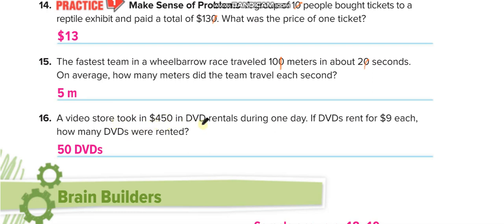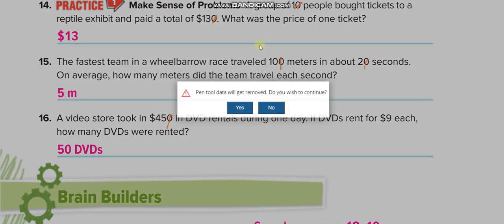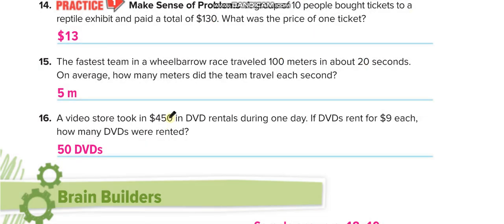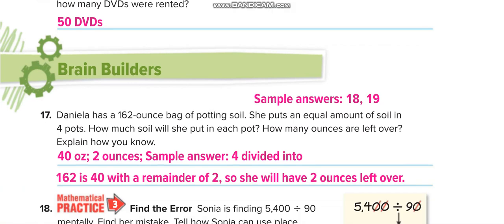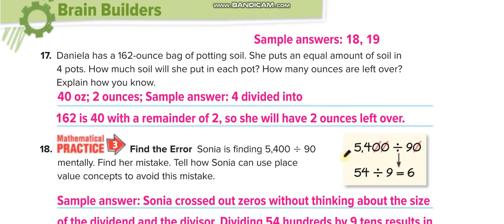A video store took in $450 in DVD rentals during one day. If DVDs rent for $9 each, how many DVDs were rented? 450 divided by 9 — we can't cancel zeros here, so we put the zero on the side. 45 divided by 9 is 5, and we put the zero back — the answer is 50 DVDs.